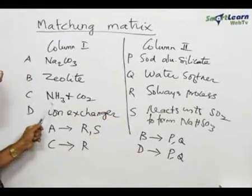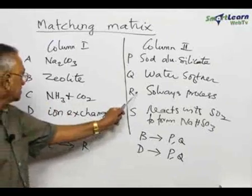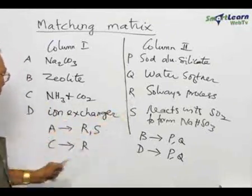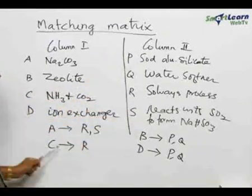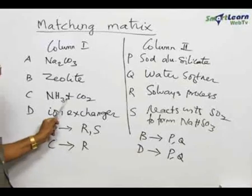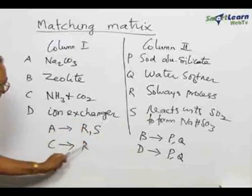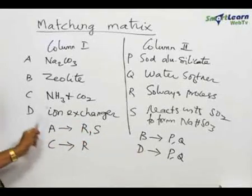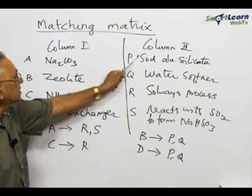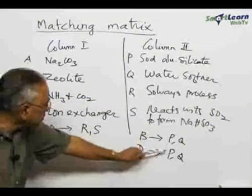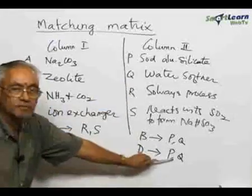Coming to C — ammonia and carbon dioxide — this is an important part of the Solvay process, which is R. So C matches with R, but it does not match with anything else. Coming to D, which is an ion exchanger — ion exchangers use sodium aluminum silicate and are also used as water softeners, matching P and Q.